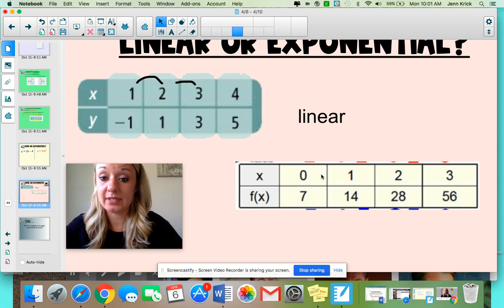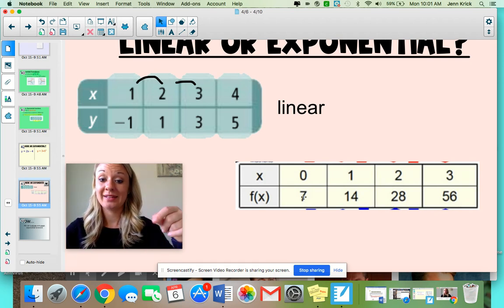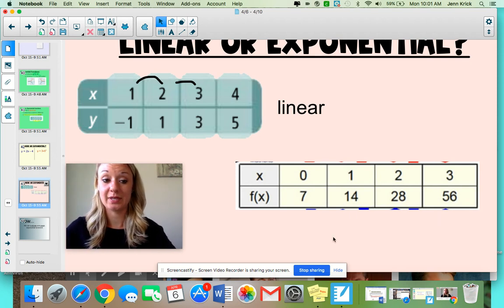Down here for this table, and I'm sure that you can guess which one this is going to be, I see that x's are all adding one. But from seven to 14, yes, I could add seven. But then if I add seven again, that would get me to 21, not 28. These are all being multiplied by two. Because your y values are being multiplied, you know that this is going to be exponential.